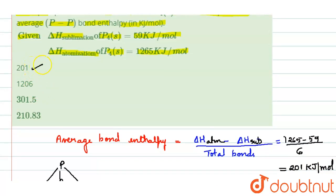Therefore, the answer is option 1: 201 kilojoules per mole. Thank you.